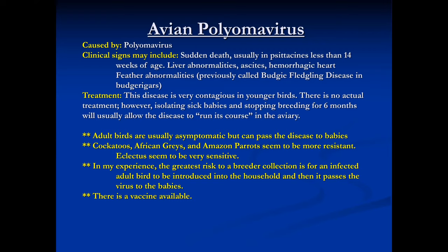To stop the disease, you stop breeding and pull all nest boxes so nobody breeds for about six months. The disease will cycle in and out of the adults, then they return to normal. Don't bring any new birds in, and after about six months you can start breeding again and the disease will be gone.